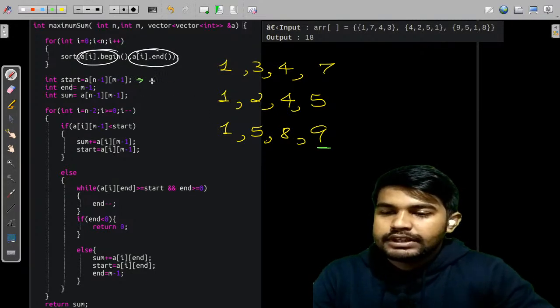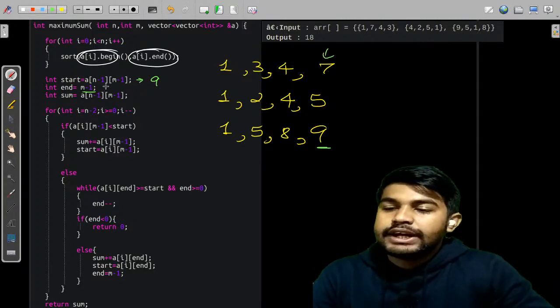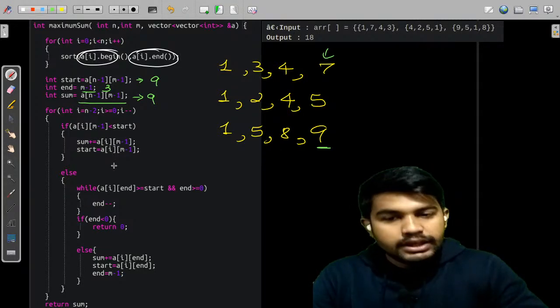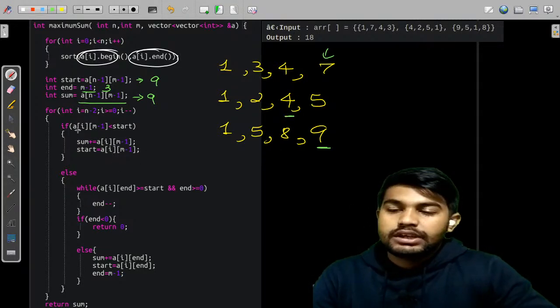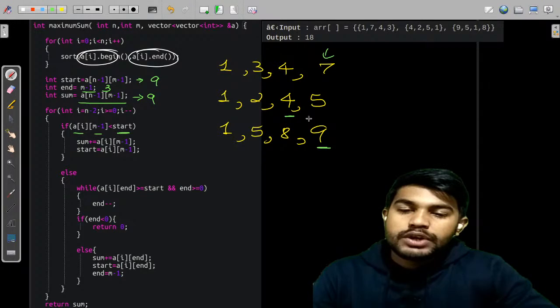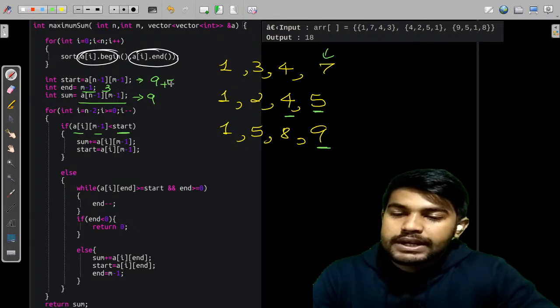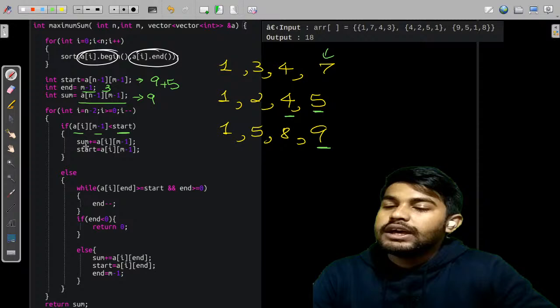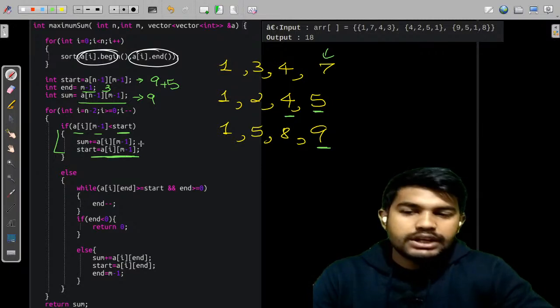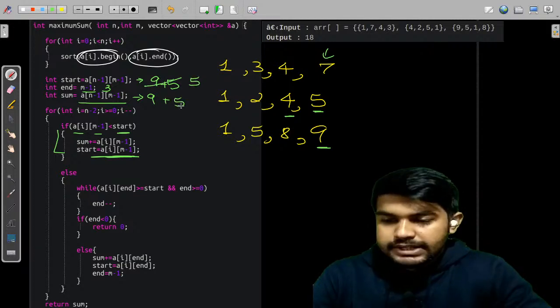We are taking the start value, so start value is the last element 9, and end is equal to m minus 1, that is the last index which is 3. Sum is now equal to 9 itself. Then we are moving to the previous array. If the last element 5 is less than the start value 9, yes it is, so we add it. Sum becomes 9 plus 5, which is 14, and start becomes 5.